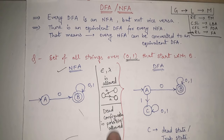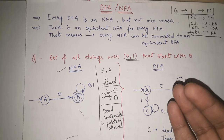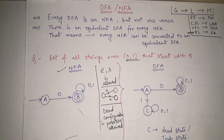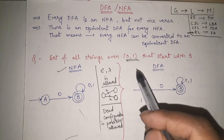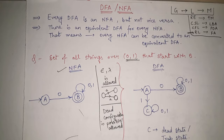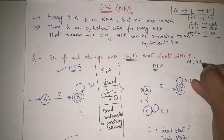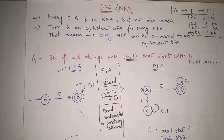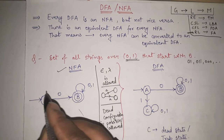We will understand these differences with a common example. The question is: accept all strings over {0, 1} that start with 0. So all valid strings must begin with 0 — like '0', '01', '011', '00', '0100', and so on. The only condition is the string must start with 0.